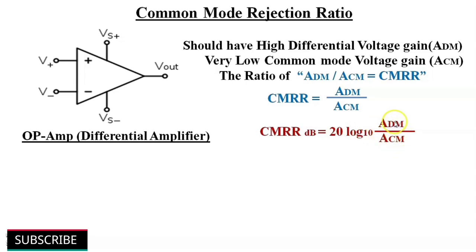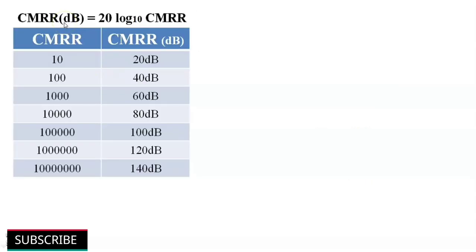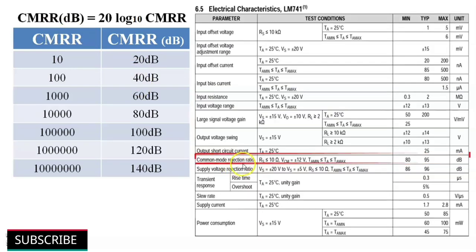Differential mode voltage gain divided by common mode voltage gain is called CMRR. So CMRR in dB = 20 × log10(ADM / ACM). A conversion table shows CMRR values in dB, and we can find the CMRR value in dB in an operational amplifier's datasheet. The CMRR value of a general-purpose operational amplifier LM741 is shown here.